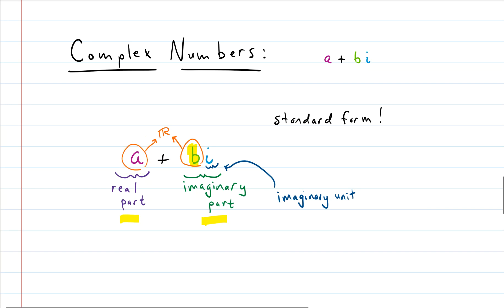So we often write the complex number in standard form. It's conventional to write the real part first and then the imaginary part second, with the i to the right of the real part b.